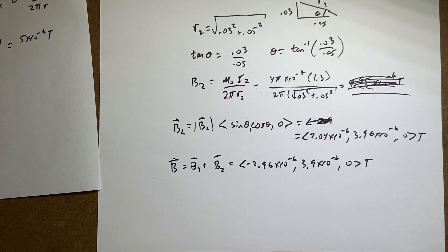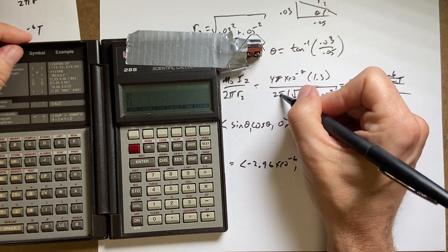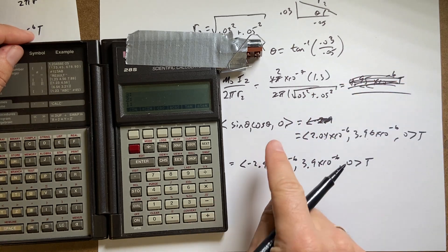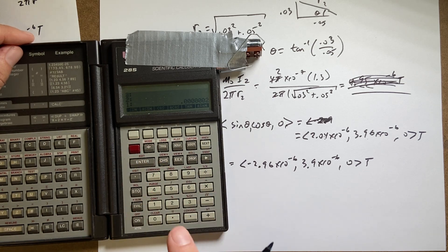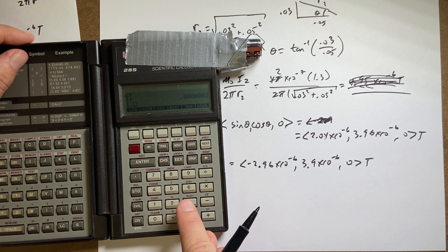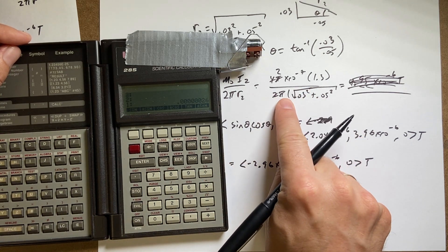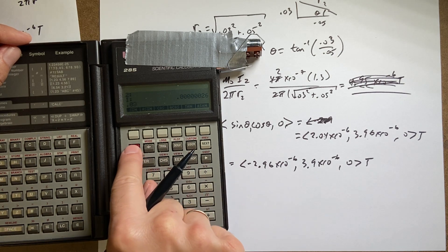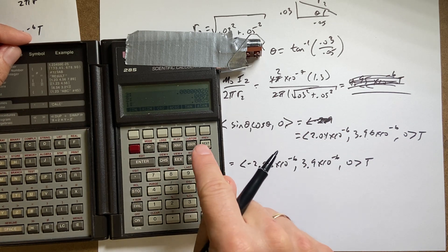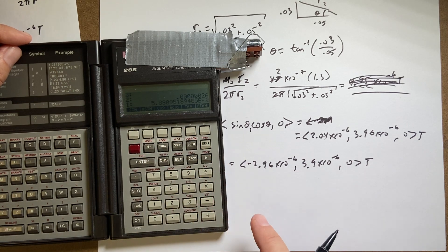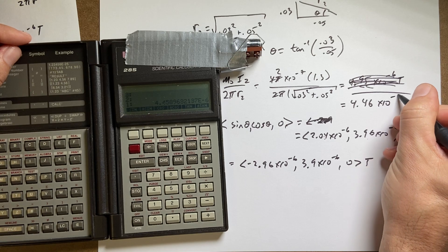Let me calculate this one because I feel like I failed you. The π's cancel and the twos cancel, so this is 2 × 10⁻⁷. I'll use my RPN calculator - hopefully it makes you jealous because it is awesome. I enter 2 × 10⁻⁷ times 1.3, then 0.03 squared plus 0.05 squared, take the square root, and divide. I get 4.46 × 10⁻⁶ Tesla.